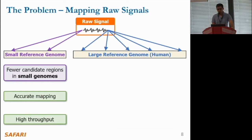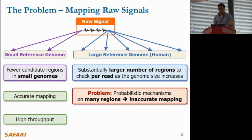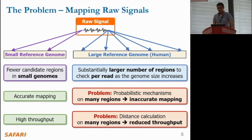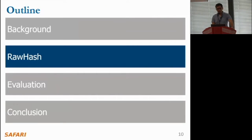These direct raw signal mapping solutions provide alternative and efficient ways to analyze raw signal data in real time. However, when mapping raw signals to a reference genome, the size of the genome plays a crucial role. For small genomes, there are fewer candidate regions to analyze per read, allowing for accurate mapping and high throughput. However, for large reference genomes, the number of regions to check per read increases substantially. Prior probabilistic mechanisms such as UNCALLED can result in inaccurate mapping, and mechanisms such as Sigmap that calculate distance on many regions significantly reduce mapping throughput. These existing solutions are inefficient or inaccurate for large genomes.